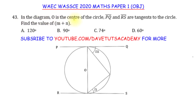In the diagram, O is the center of the circle. PQ and RS are tangent to the circle. We have to find the value of M plus N. M is the angle between the tangent and this particular chord, and N is the angle between the tangent and this other chord.